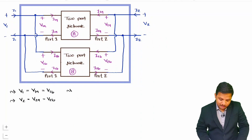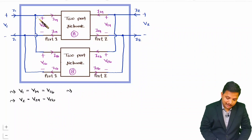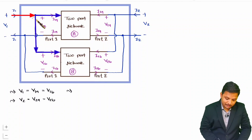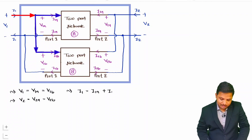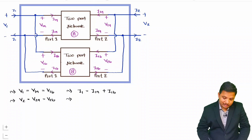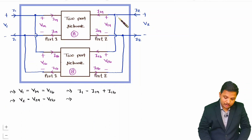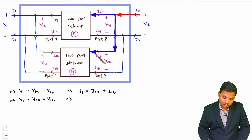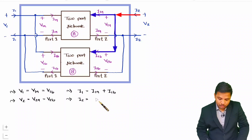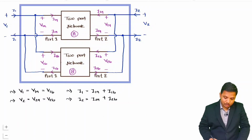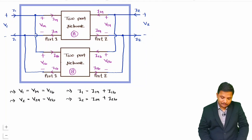Applying KCL at the input node, the entering current I1 equals the leaving currents I1A plus I1B. Similarly, applying KCL at the output node, the entering current I2 equals I2A plus I2B. This gives us the voltage and current relations for the parallel connection.